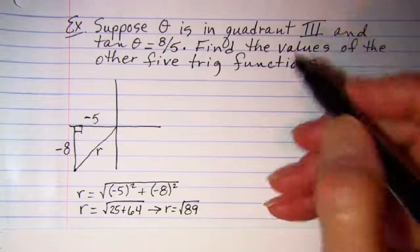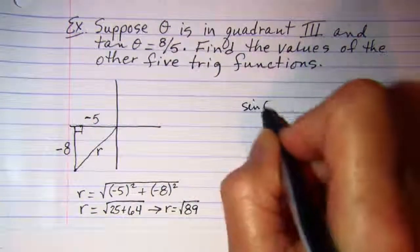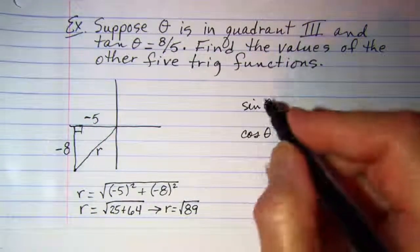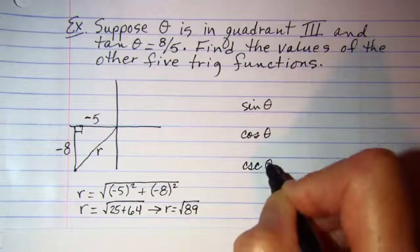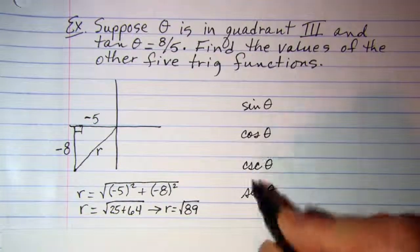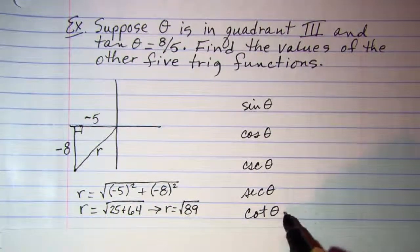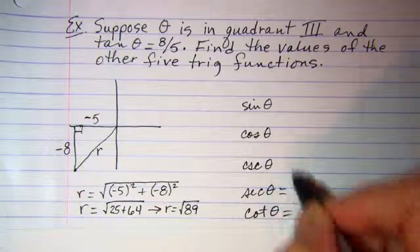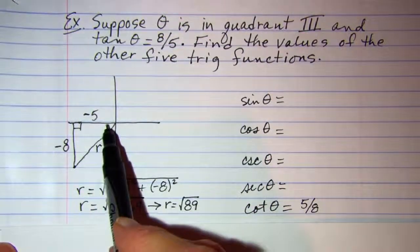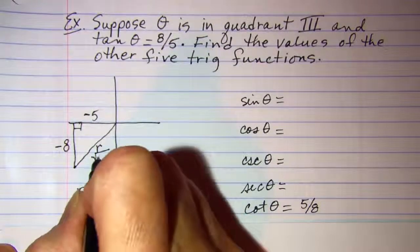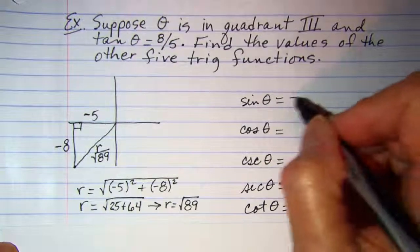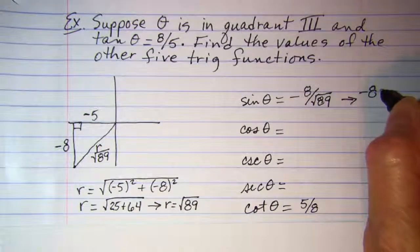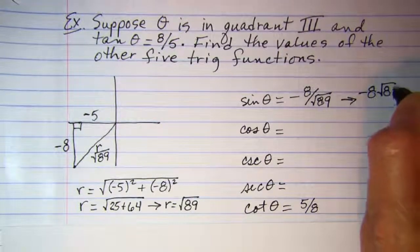So let's write down our trig functions: sine theta, cosine theta, and tangent was given so we don't need that one, the reciprocal of sine, cosecant theta, secant theta, and cotangent theta. Well, cotangent theta is just the reciprocal of tangent, so I can write that immediately: that's 5 eighths. Sine is y over r, and we said r was the square root of 89. So we have negative 8 over the square root of 89. When we rationalize that denominator, we get negative 8 square root of 89 over 89.